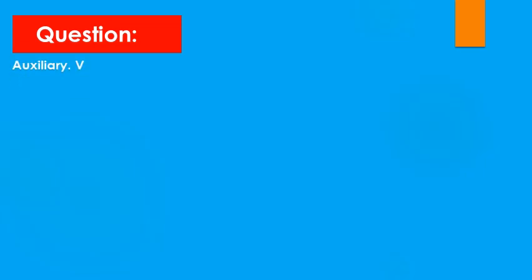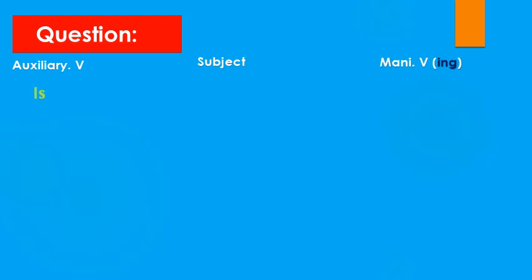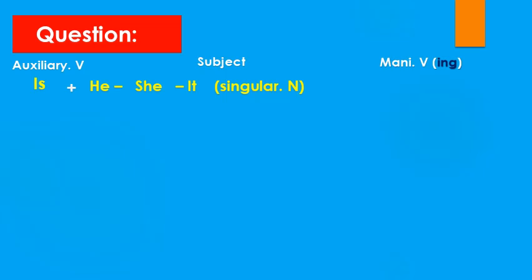For the question form, we have: auxiliary verb (al-fa'al al-muthbata), then the subject, then the main verb with -ing, and the question mark. If the auxiliary is 'is', then the subject is he, she, it, or any singular noun.